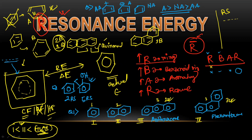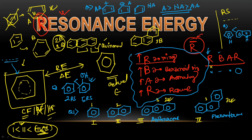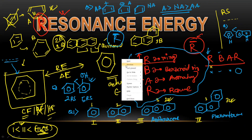Final question: compare pyrrole and indole. Using R first — pyrrole has one ring and indole has two rings. So with just the first criterion we can conclude indole has more resonance energy. Overall, keep in mind the trick R-BAR: to compare resonance energy, take R and make a bar over it, then check rings, then benzenoid rings, then aromaticity, then resonance structures. This allows you to compare resonance energy in any question.